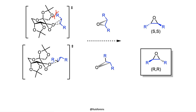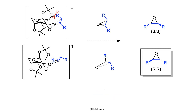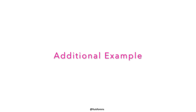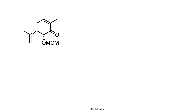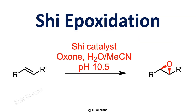According to the suggested spiro transition state, oxidation by the active dioxirane catalyst takes place from the re-face due to steric hindrance of the opposing si-face. For this reason, trans-disubstituted and trisubstituted olefins give heightened enantioselectivities, whereas for cis-disubstituted and terminal olefins, the enantiomeric excesses are lower.